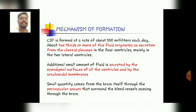CSF is formed at a rate of about 550 milliliters each day, and about two-thirds or more of this fluid originates as secretion from the choroid plexus in the four ventricles — mainly in the two lateral ventricles and the third and fourth ventricles.